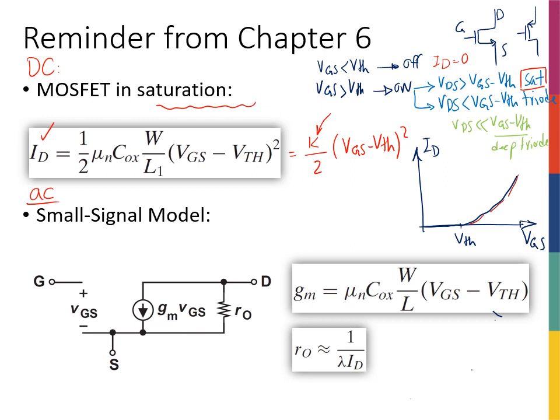Therefore, I couldn't have VGS changing more than a little bit so that I can still approximate it as a line. That's why I wanted my signal, my gate, the variations at the gate to be small.